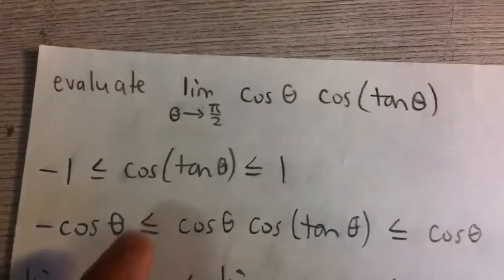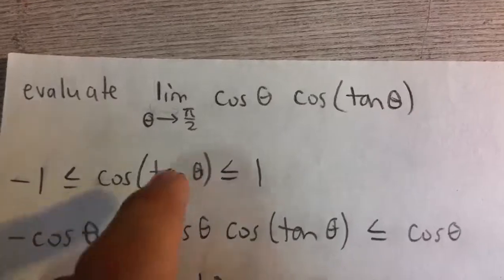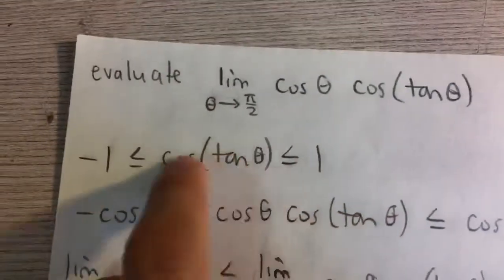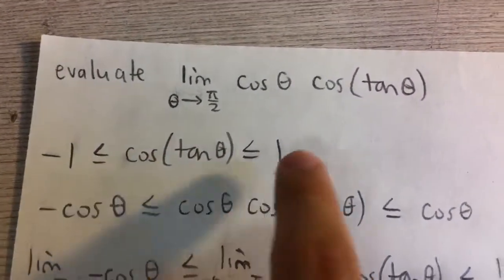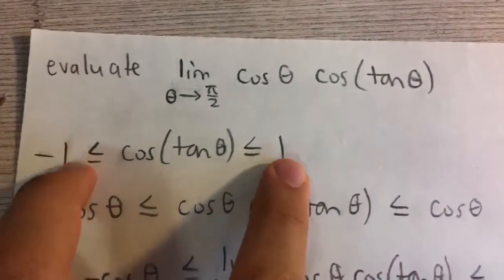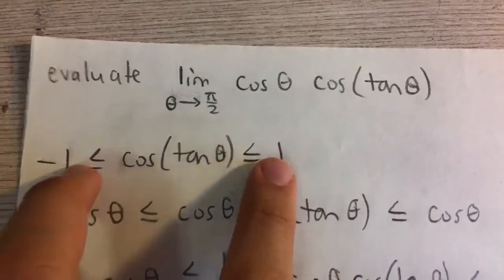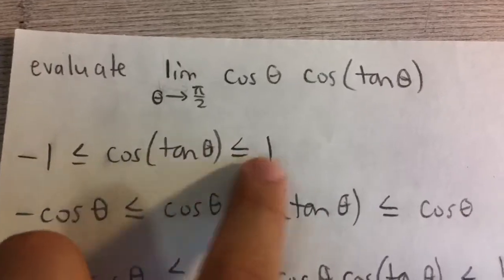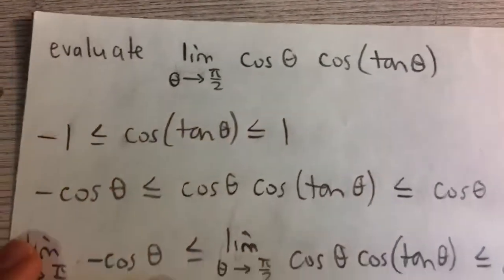And so what we're going to do is we're going to manipulate this inequality to get this limit in between and then by the squeeze theorem we're going to evaluate the limits on each side and then if they're equal then we can say that this is also equal to that, equal to the limit of the outside.